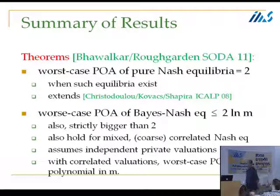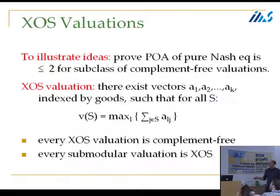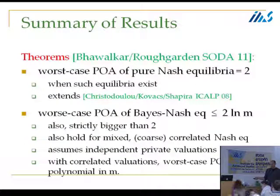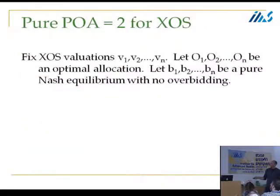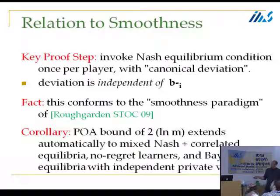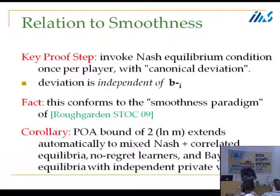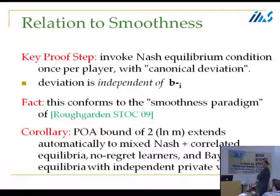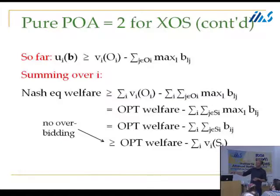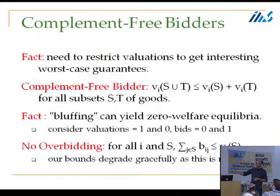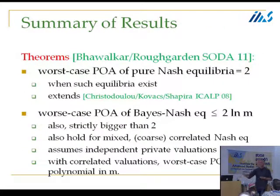I want to point out that independence of valuations is key. We can also prove that with correlated valuation distributions — even if they're submodular — we have a polynomial lower bound on the price of anarchy. So it makes a big difference for welfare efficiency loss at equilibrium whether bidders have independent or correlated valuations.